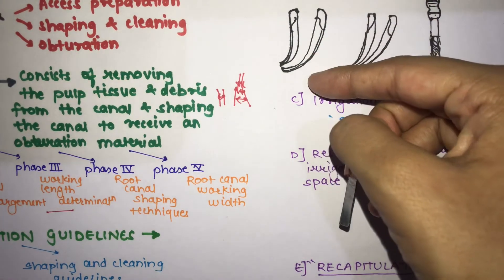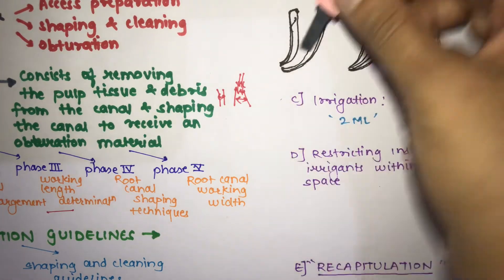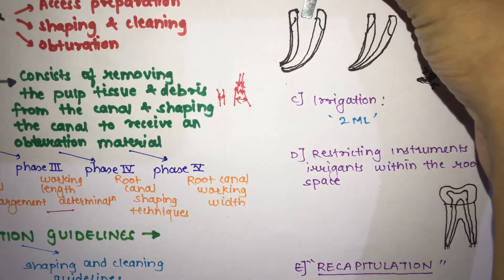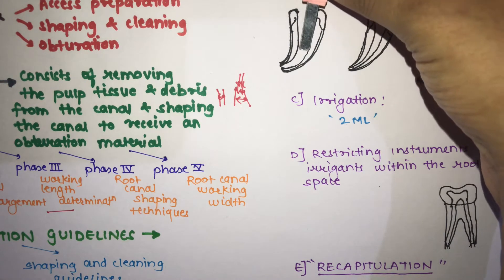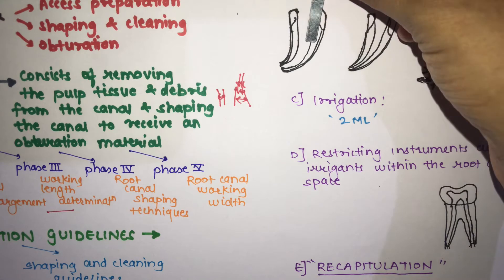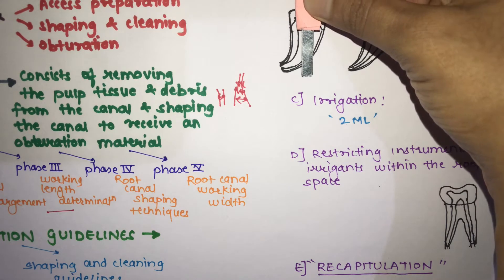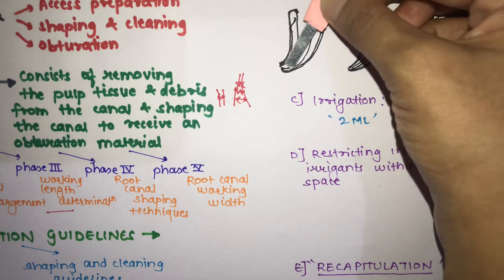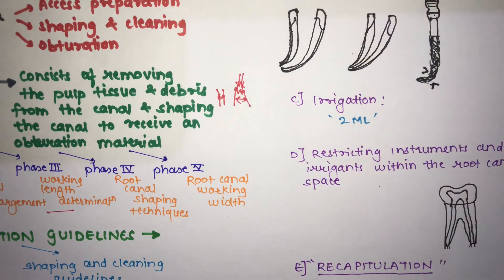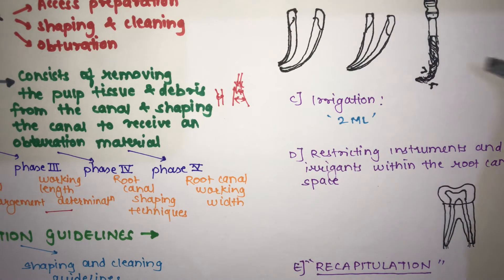To pre-curve the file, grasp it with a gauze sponge and carefully bend it. Gauze is used instead of cotton because cotton gets engaged in the flutes. You bend the instrument slightly according to the canal curvature so it follows the curved canal properly instead of going straight and causing ledging.